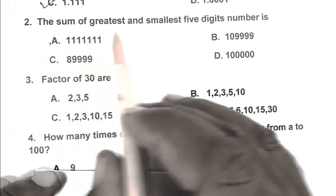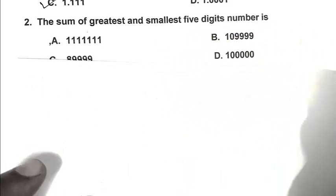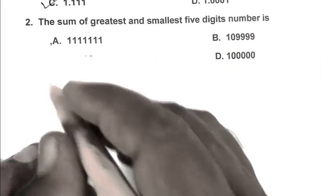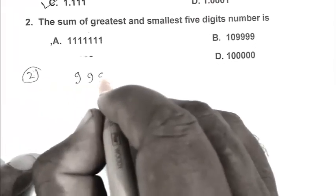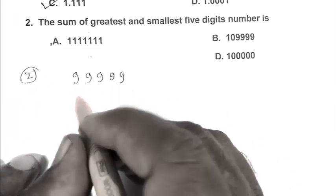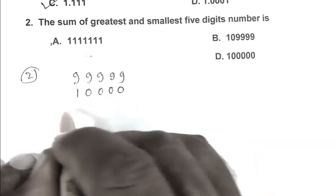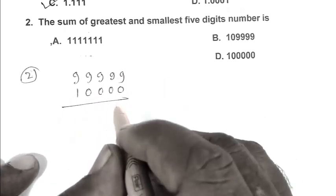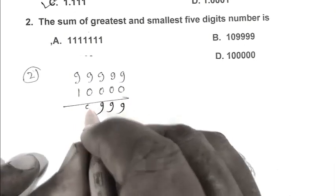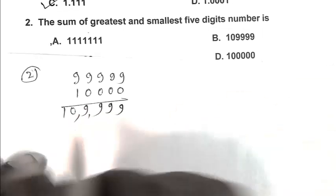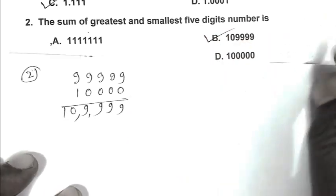Question number 2. The sum of greatest and smallest 5-digit number is. The greatest 5-digit number is 99999 and smallest 5-digit number is 10000. The sum is 109999, so B is the right answer.